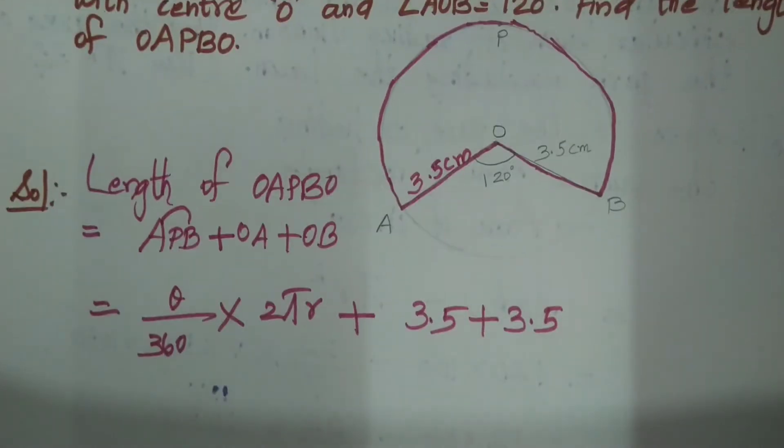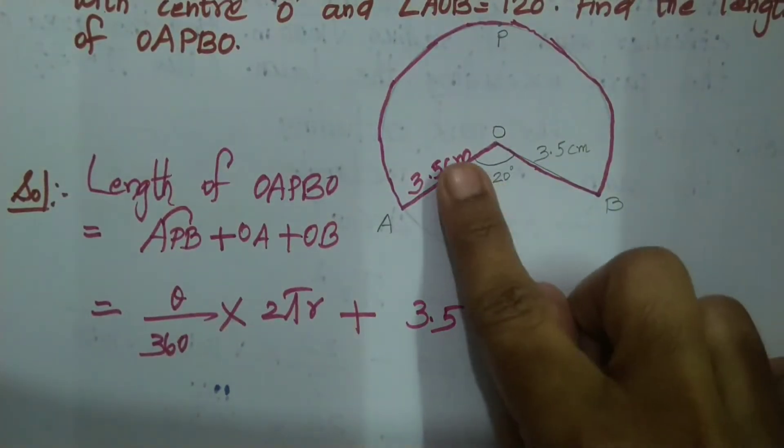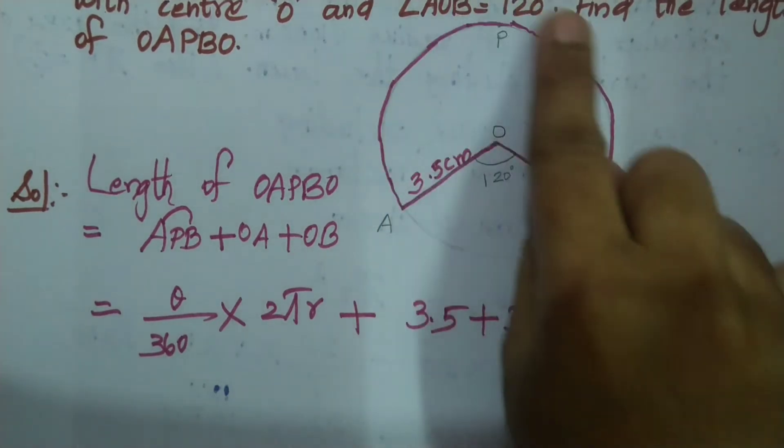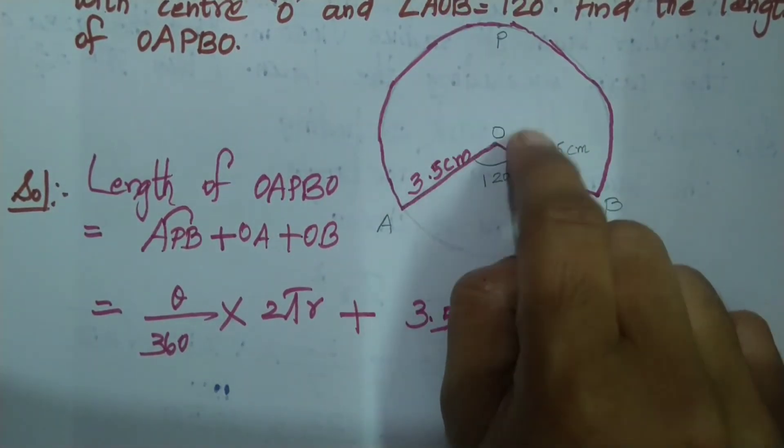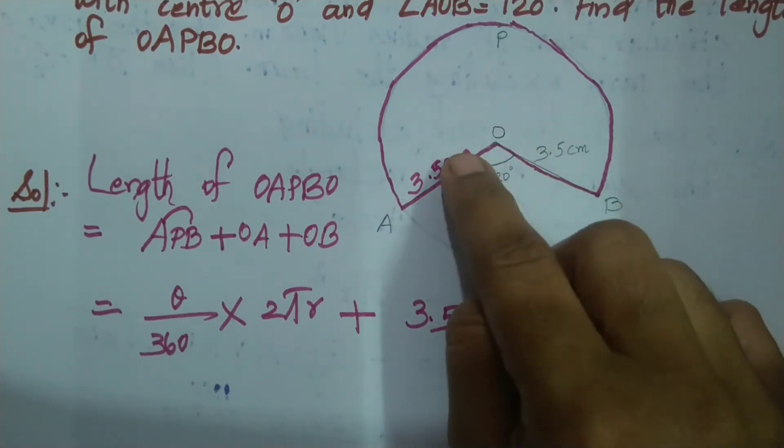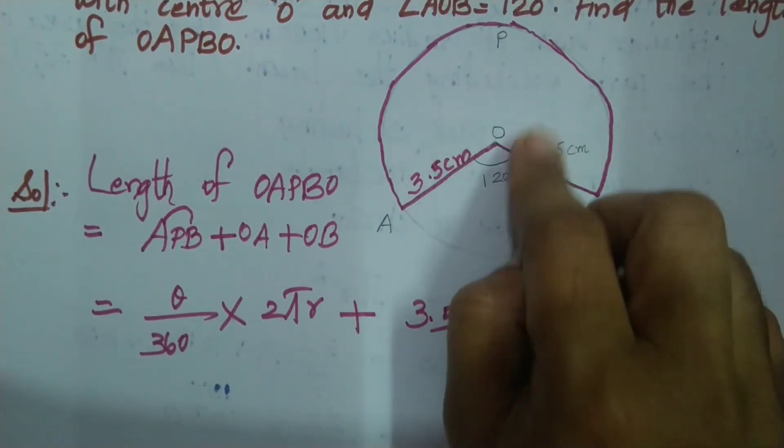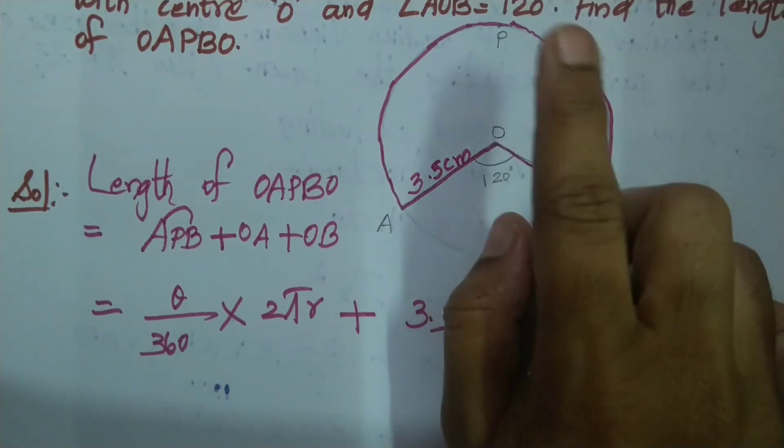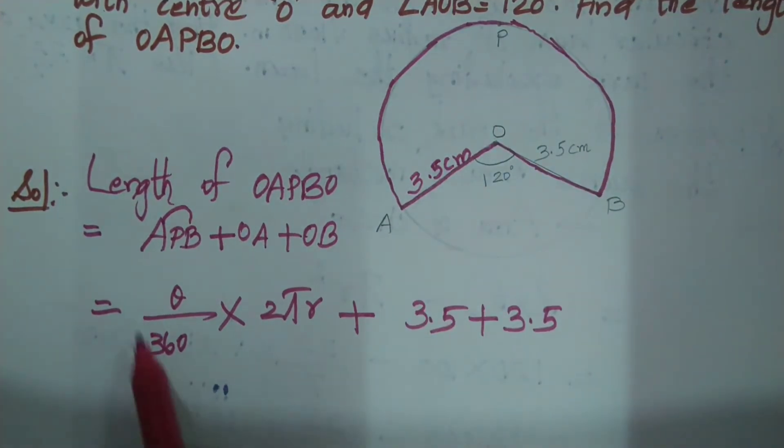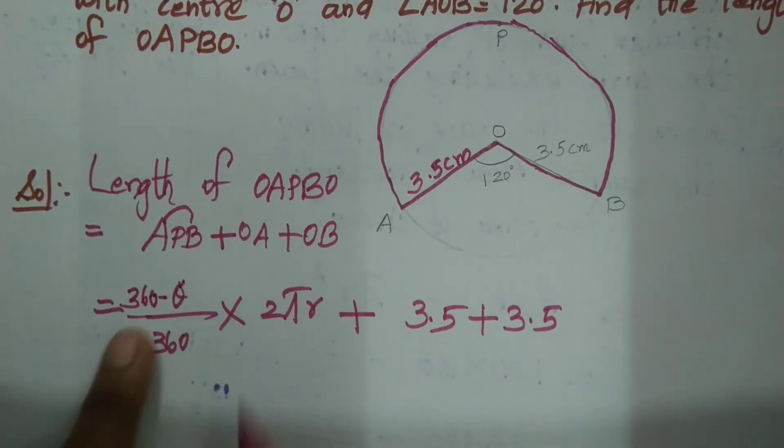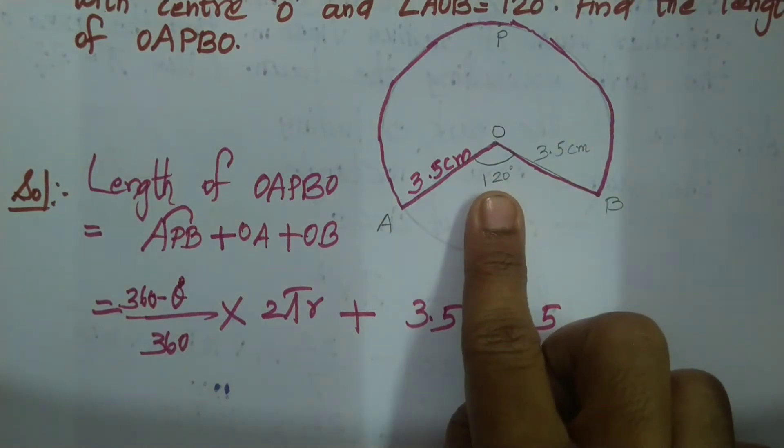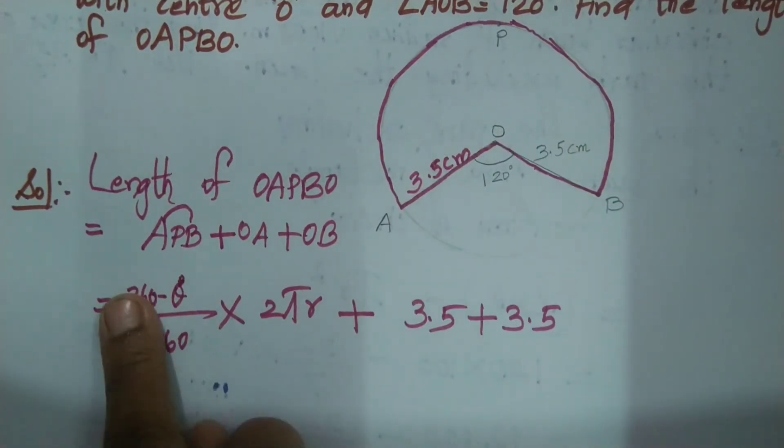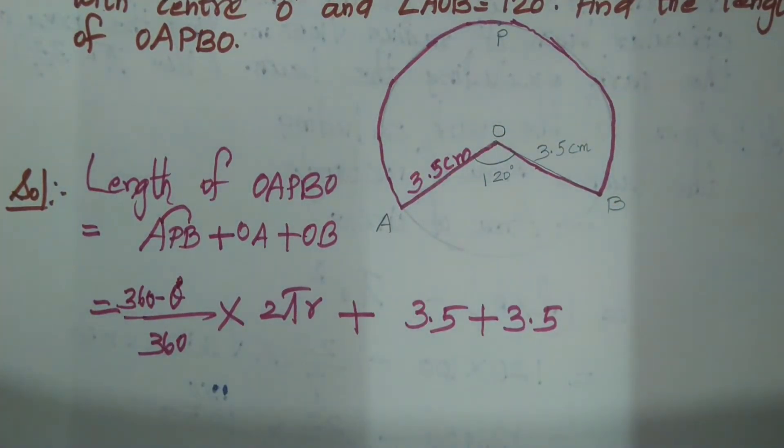Theta actually, you can do this theta. This is the arc. So actually, this is the angle. This angle is 120. This angle is 360. So 360 minus theta. So actually, you can do 360 minus theta because we have the theta angle. This angle is the minor section angle. So major section, it will be 360 minus theta.